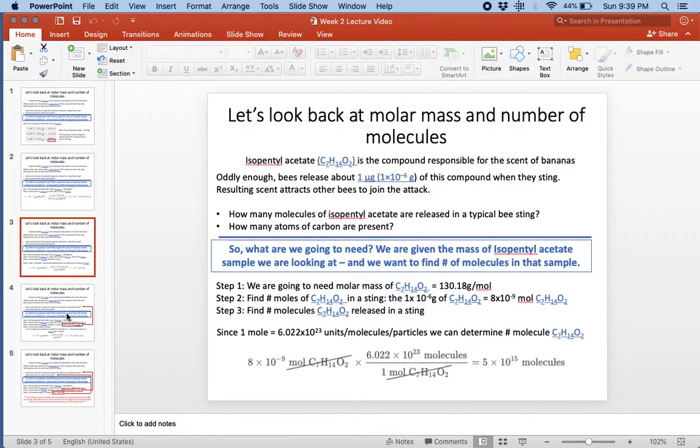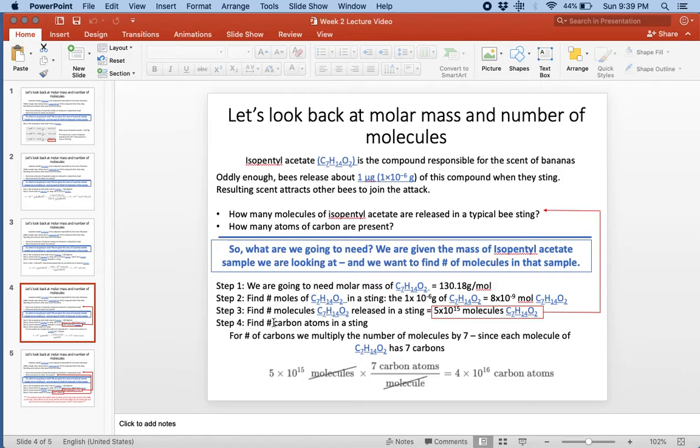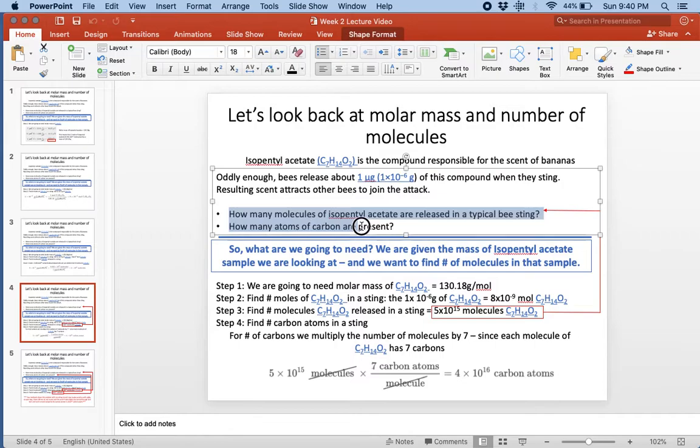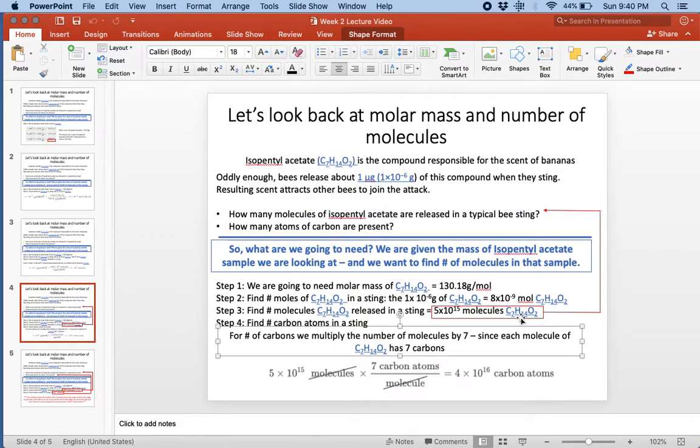We're getting close now. That was what the first question was asking: how many molecules of isopentyl acetate are released in a typical bee sting? The answer is 5 times 10 to the 15 molecules.